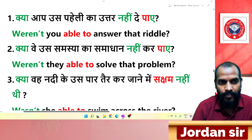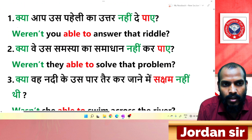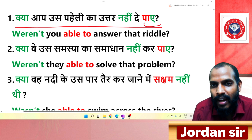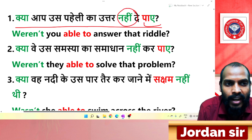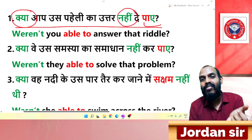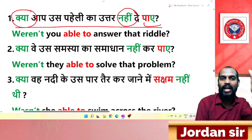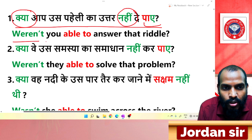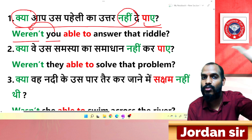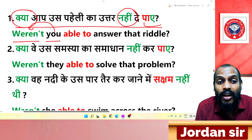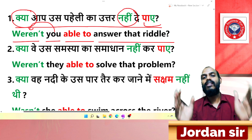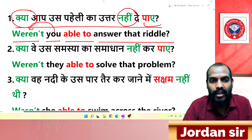First negative interrogative example: 'क्या आप उस सवाल का उत्तर नहीं दे पाए?' The ending 'पाए' and 'नहीं' tell us it is negative interrogative. Use 'weren't' before the subject. 'Weren't you able to answer that question?' Note: 'you' can be both singular and plural.